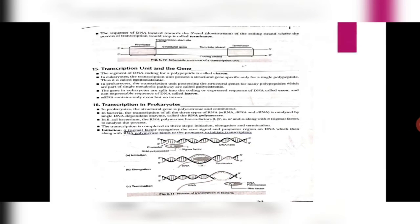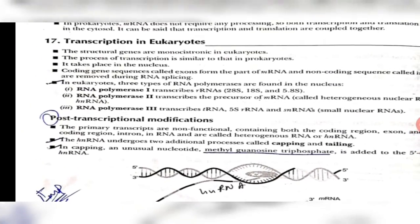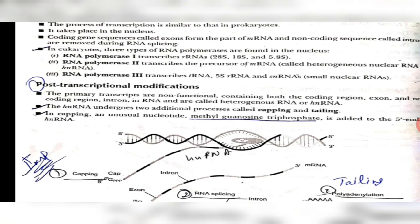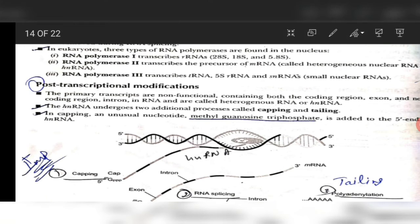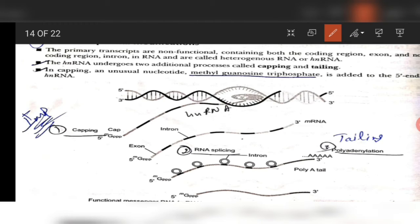In eukaryotes, the process is different — there are three types of RNA polymerase. RNA pol 1 makes rRNA, RNA pol 2 makes mRNA, and RNA pol 3 makes tRNA and 5S rRNA. We only need to consider RNA pol 2. The problem here is that the RNA produced is not mRNA but HnRNA — heterogeneous RNA — because there are coding and non-coding sequences mixed in. The non-coding parts must be removed through post-transcriptional modification, which is very important.